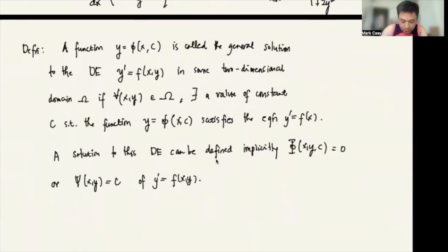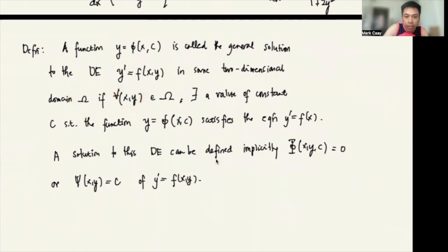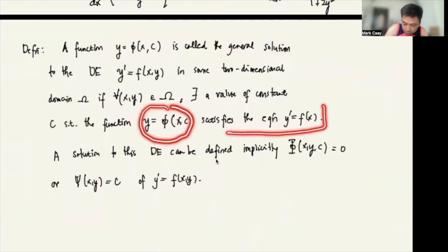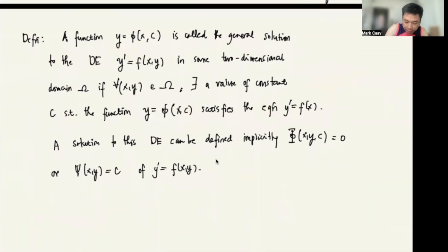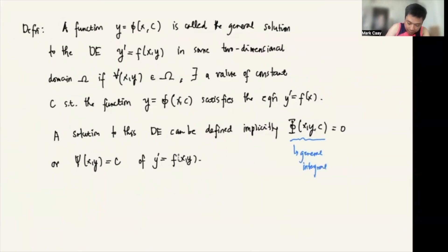With that, let us formally define the general solution. A function of this form is called the general solution to the differential equation in some two-dimensional domain. If for every pair (x, y) in the domain there exists a value of a constant c such that the function satisfies the equation y′ = f(x, y), then the solution can be defined implicitly. In this case, this is our general integral and this is our potential function.